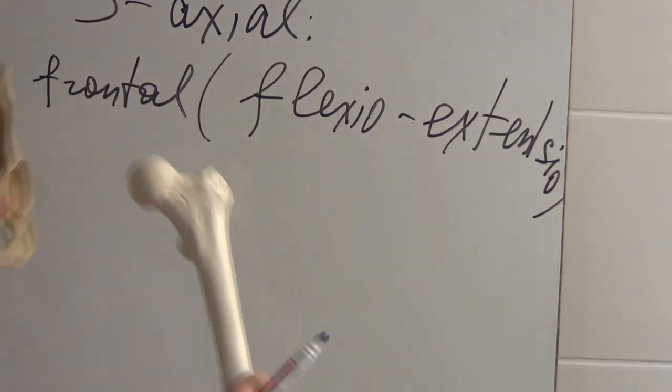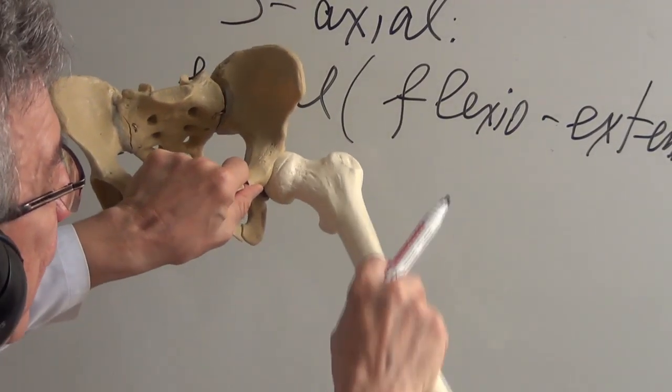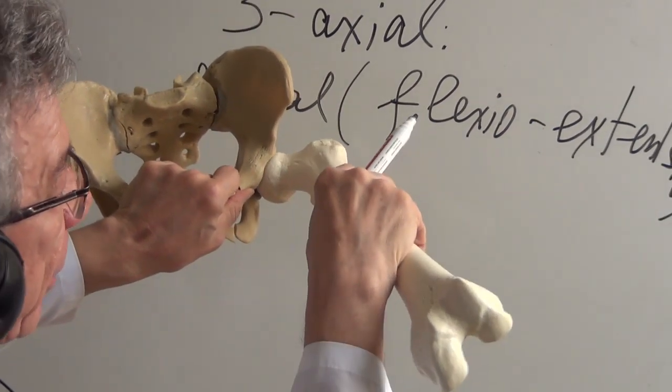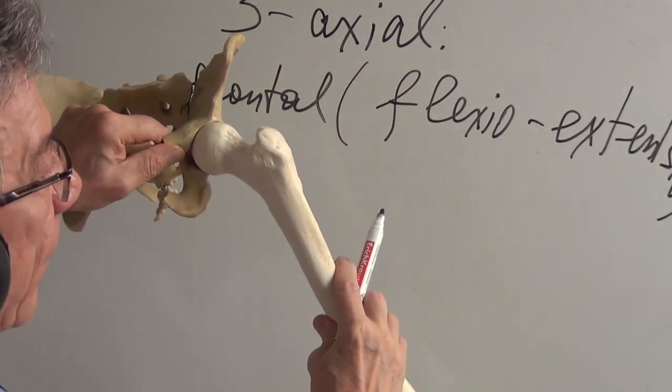How can we distinguish flexio from extensio? Flexio to the direction of abdomen. Extensio to the direction of back.